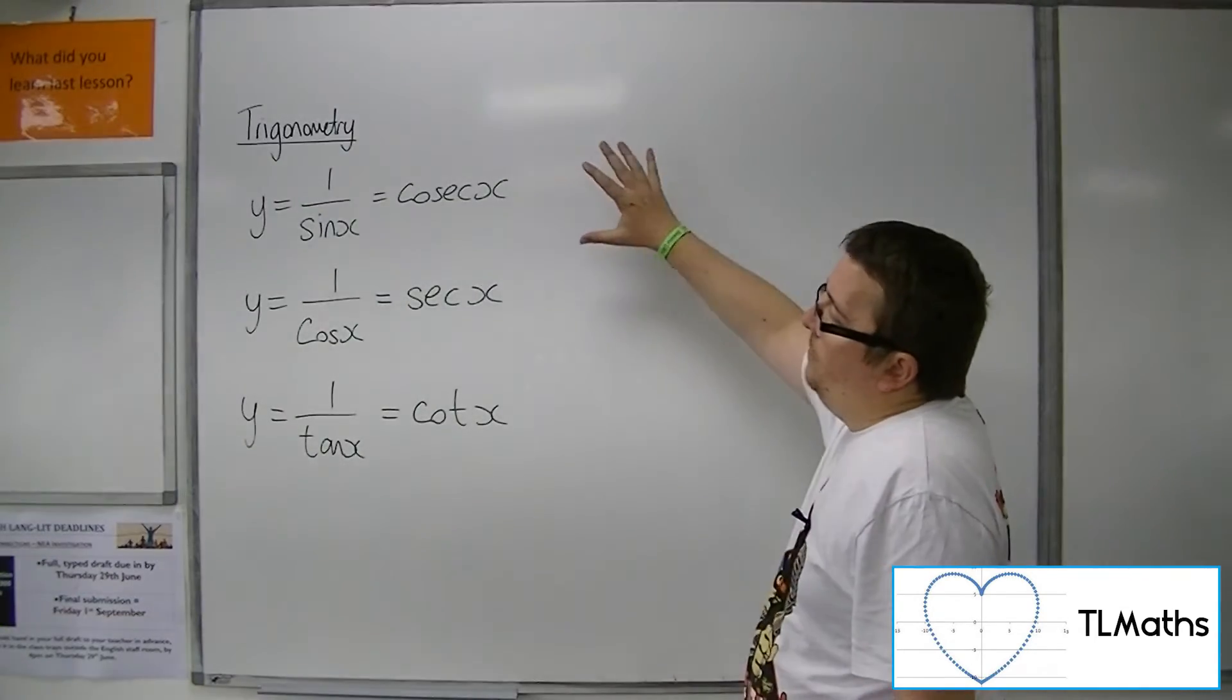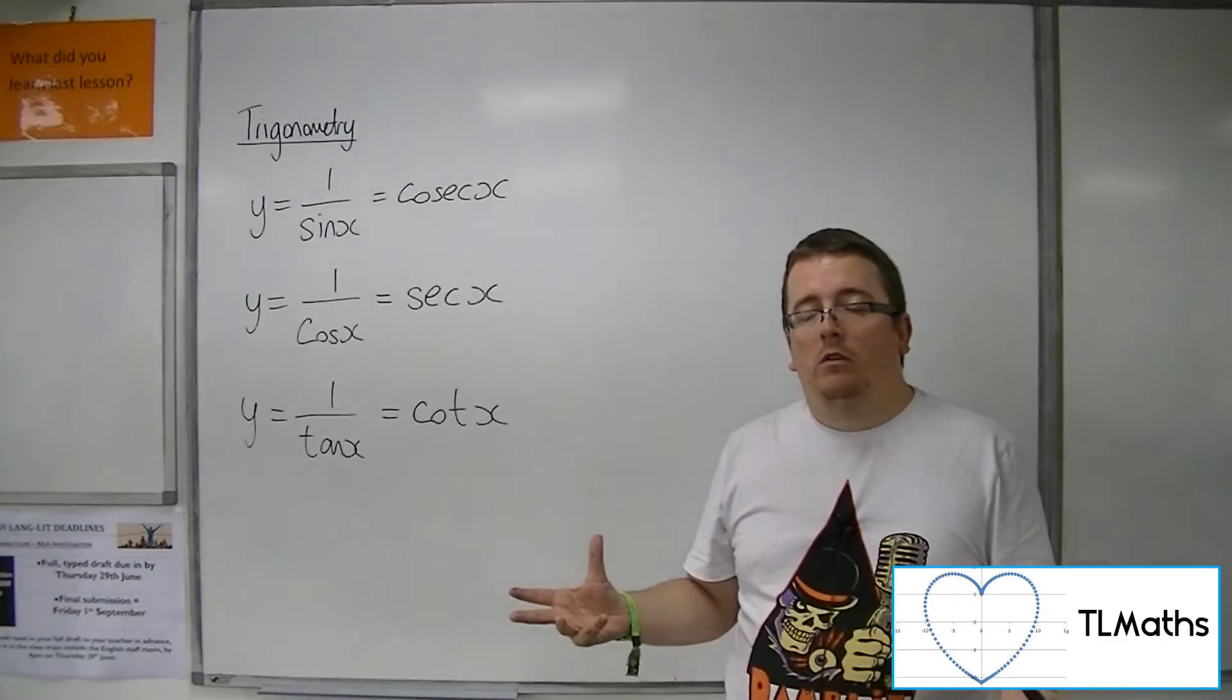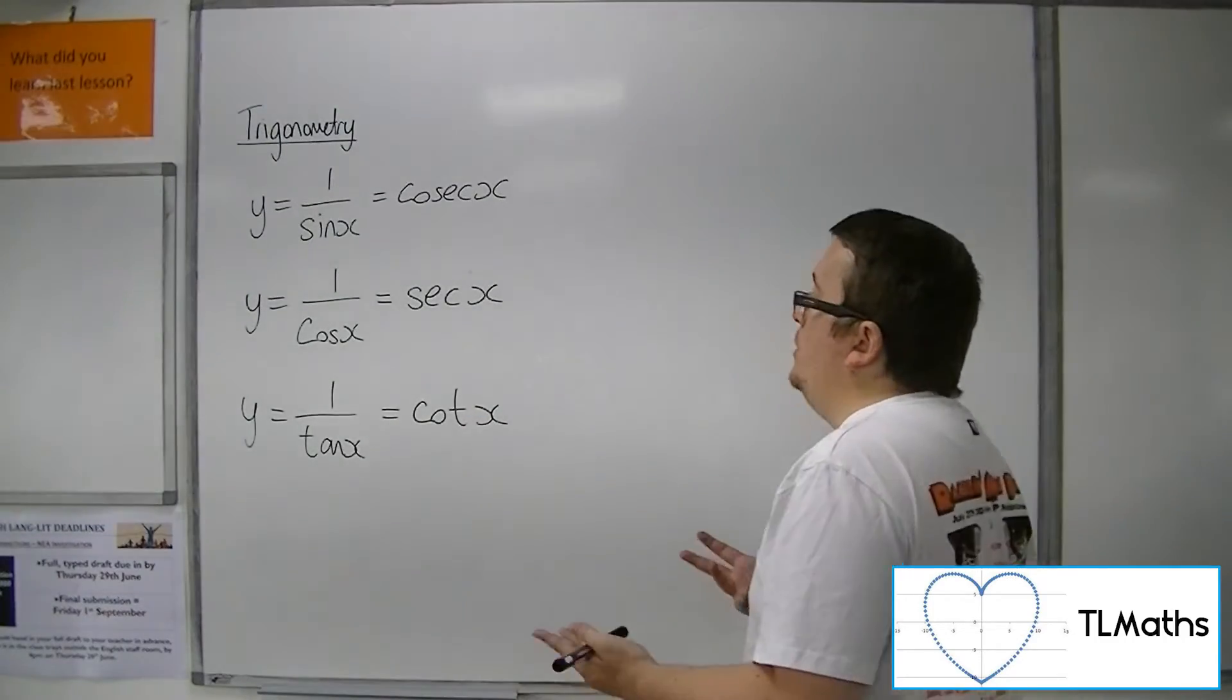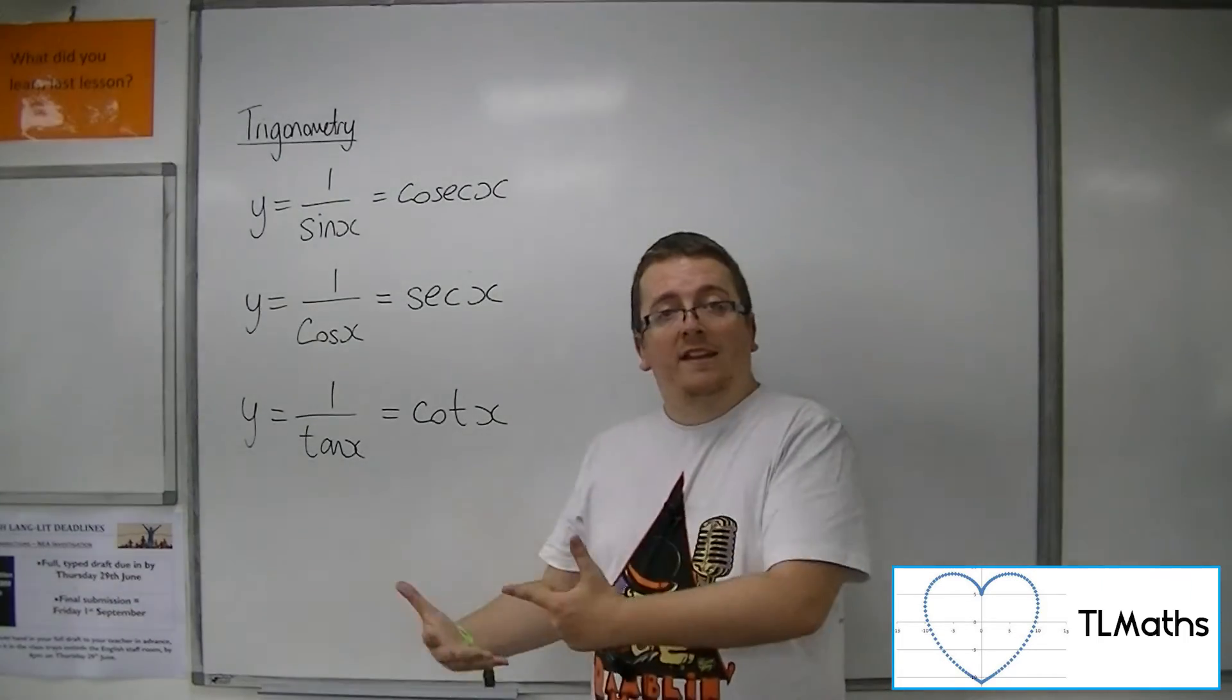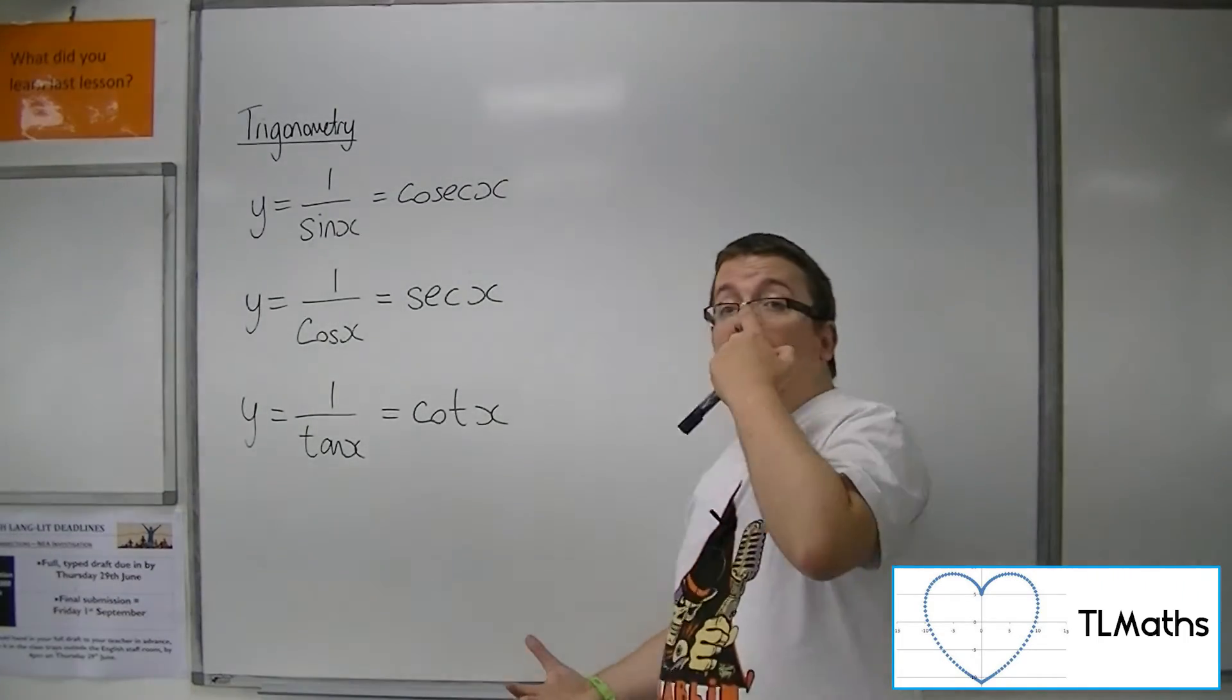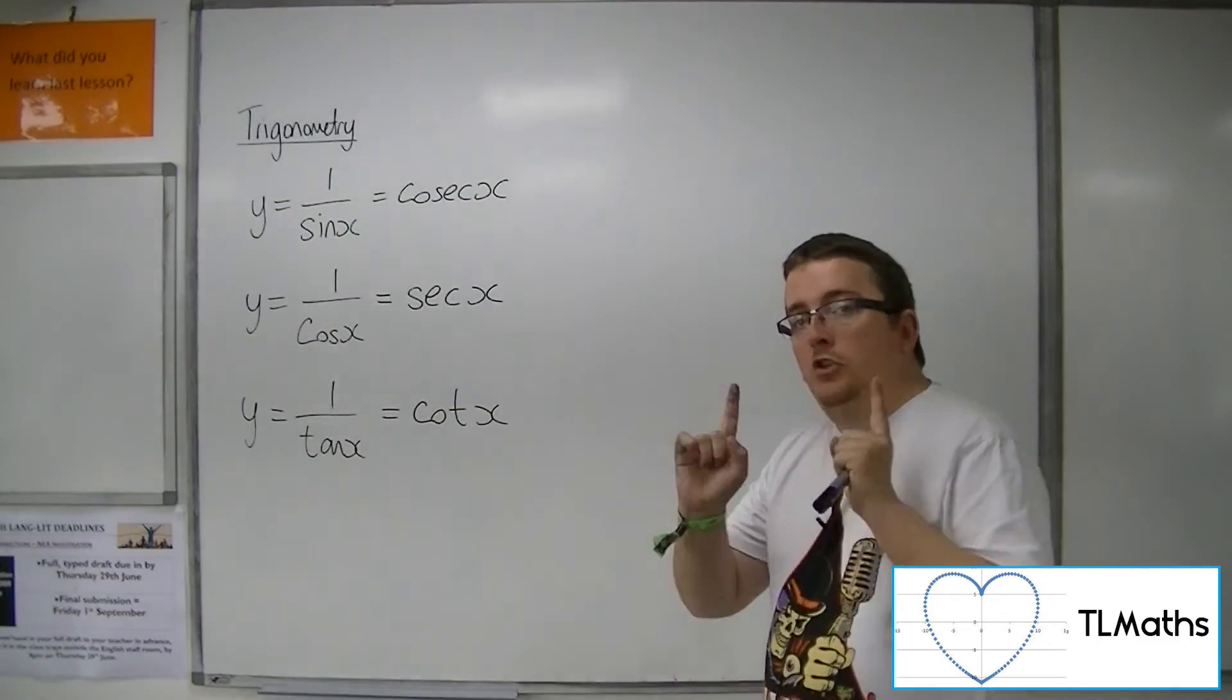And it's a lot about kind of how do I remember which is which? Because obviously you need to know that cosec is one over sin and not get it confused with one over cos, which is quite easy to do unless you know a little trick.